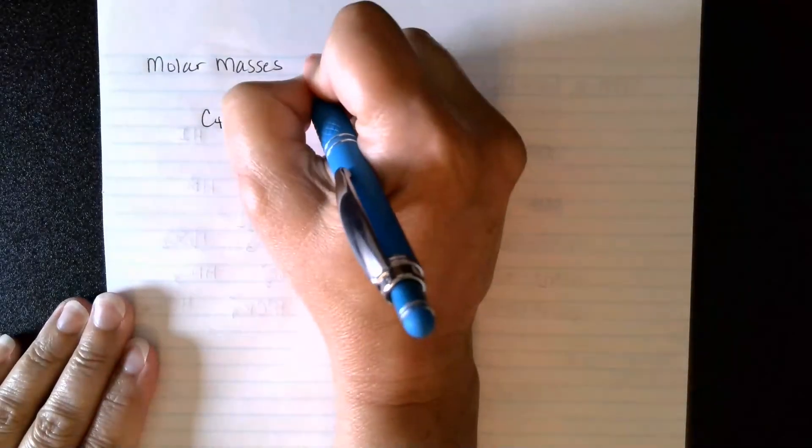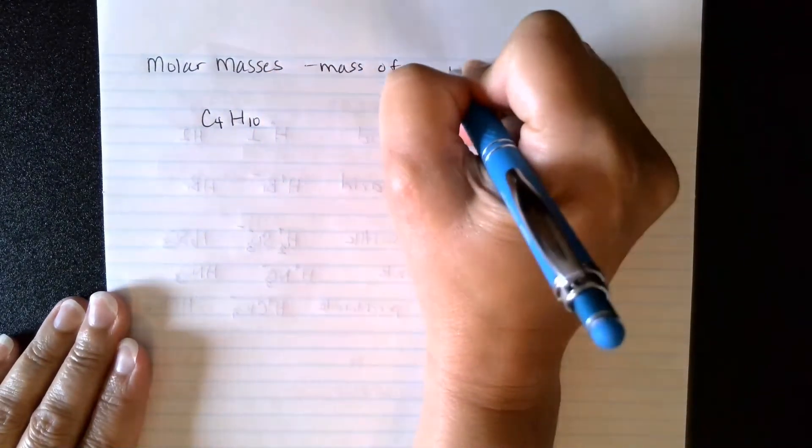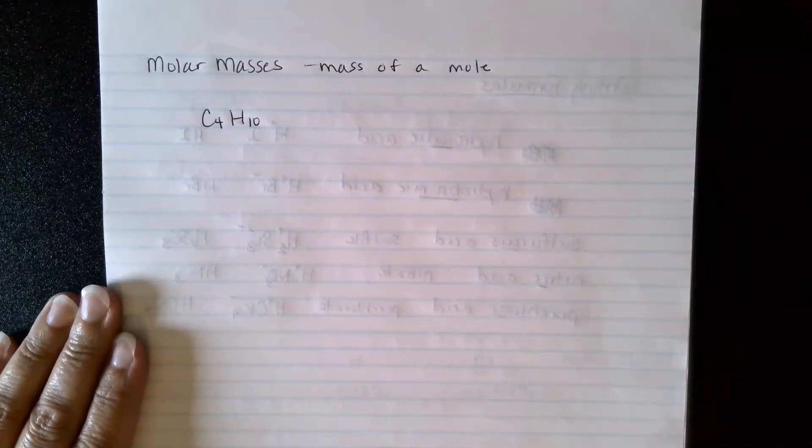Now we're going to be looking at molar masses as well as empirical and molecular formulas. So the molar mass is the mass of a mole. And we've already looked at how to do calculations with molar masses when we were talking about an element.